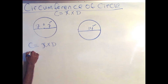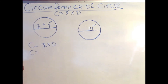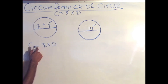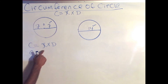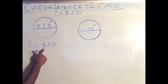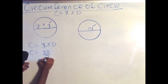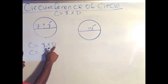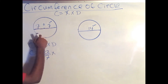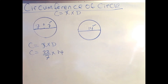Now I can solve the problem. Circumference equals pi times diameter. Remember, pi is either 22 over 7 or 3.14. We're going to solve this problem using both. So let's solve it first using 22 over 7. Pi equals 22 over 7 times my diameter. So 7 plus 7 is 14, and that's how I get my 14.